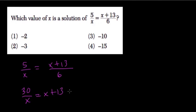Now I'm going to multiply everything by x. On the left-hand side, the xs will cancel out, so I get 30.